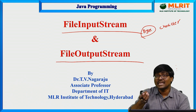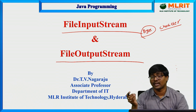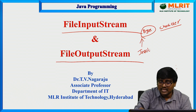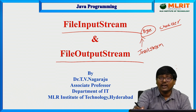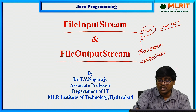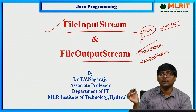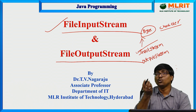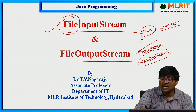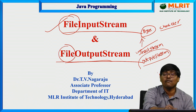Generally, byte stream is used for reading binary data — that is images, audio, and video. Character stream is used for reading text data. For reading purpose the class we use is InputStream, and for writing purpose the class is OutputStream. FileInputStream is a subclass of InputStream used to read data from a file, and FileOutputStream is a subclass of OutputStream where the output is produced to a file.